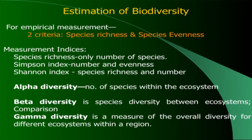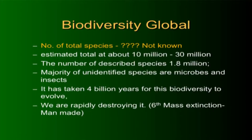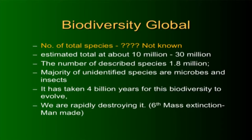There are different indices to measure biodiversity. Species richness talks only about the number of species. The Shannon and Simpson indices are different measures of diversity. The Simpson index takes care of both number and evenness — how evenly species are distributed. The total number of species is still unknown; some scientists say 10 million, others say 30 million. Described species — those identified and recorded — number 1.8 million, with the majority being microbes and insects.